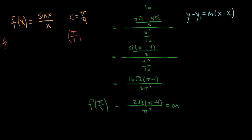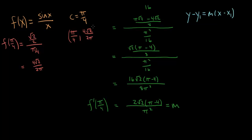So f of pi over 4 — not f prime, but f — of pi over 4. Sine of pi over 4 was root 2 over 2, over pi over 4. So we have a fraction divided by another fraction. Flipping the divisor and multiplying gives us 4 square roots of 2 over 2 pi. So there's my corresponding y value: 4 square roots of 2 over 2 pi. So that's x1 comma y1. I have a point and I have a slope, so I can use point-slope form.